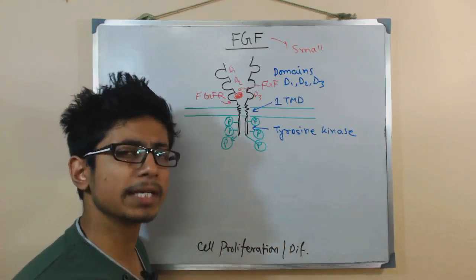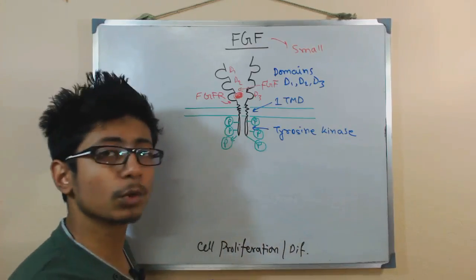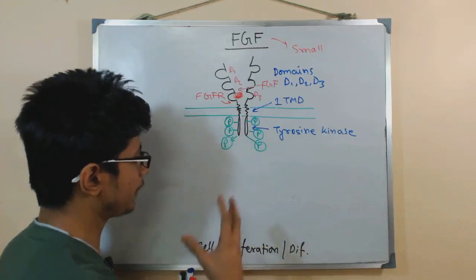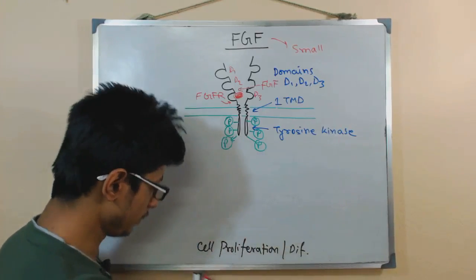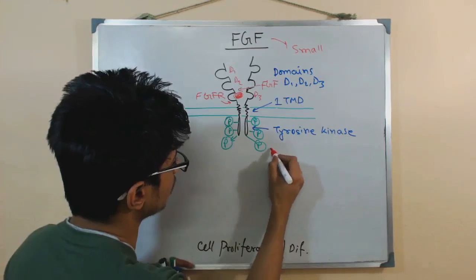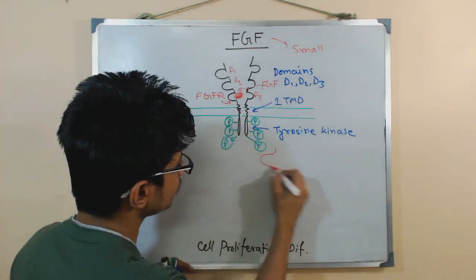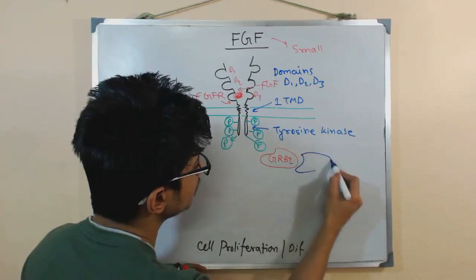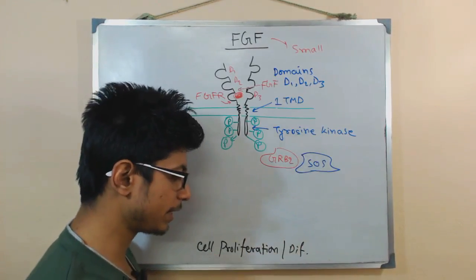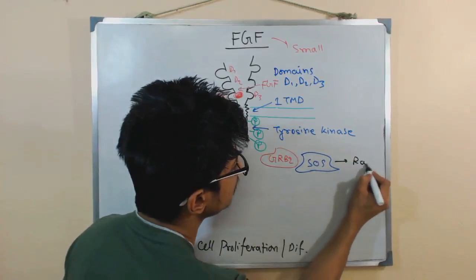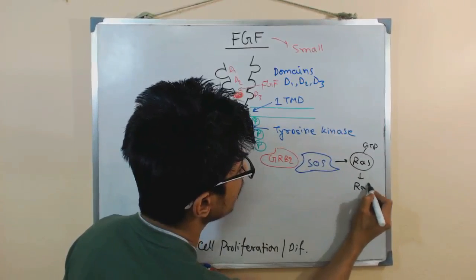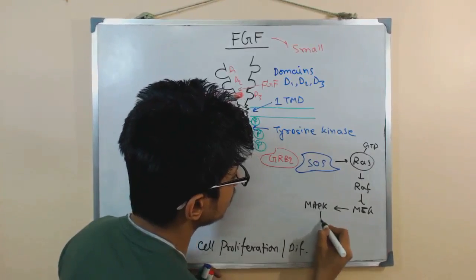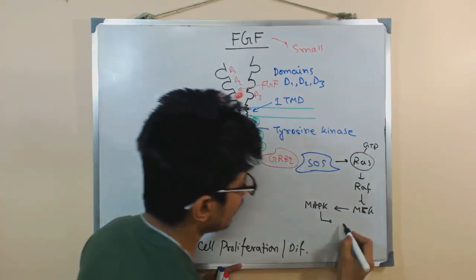After phosphorylation, there are many ways that the signal is relayed to finally achieve cell growth and division, as well as proliferation and differentiation. For cell growth, the pathway is similar to the epidermal growth factor pathway: it involves GRB2 protein, which interacts with SOS protein. Once SOS is activated, it activates RAS. Once RAS is activated with GTP, RAS activates RAF, RAF activates MEK, MEK activates MAP kinase, and MAP kinase activates transcription factors called CREBs.